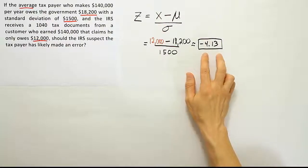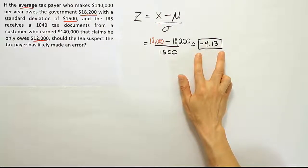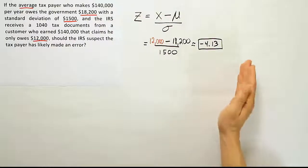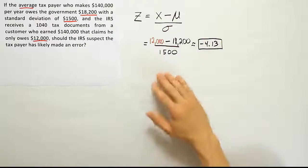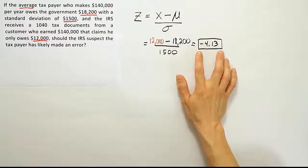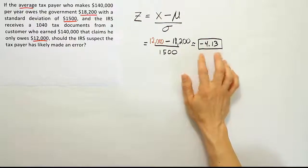So at least with respect to the idea that no less than 75% of the data is between two standard deviations below and two above. So if you're below two, you're already in a pretty small minority of the population, but this is minus 4.13 standard deviations.